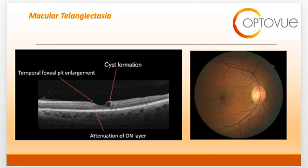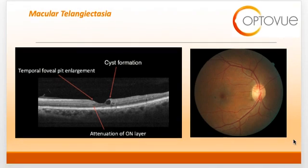On the left-hand side, you can see the early OCT signs of MAC-TEL. These include temporal foveal pit enlargement secondary to loss of the outer nuclear layer and ellipsoid zone, that eventually can progress into cavitations or cysts on the superficial part of the OCT scan. You can see on this scan that I have delineated the cyst formation, the temporal foveal pit enlargement, and the attenuation of the outer nuclear layer.